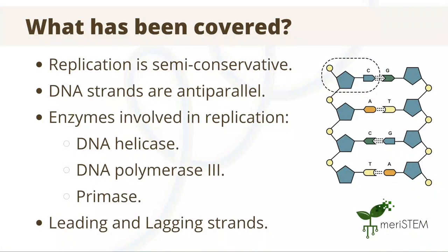In summary, today we learnt about how DNA replication is semi-conservative, and we learnt about how DNA strands are anti-parallel. We also talked about some of the enzymes involved in this process, such as DNA helicase, DNA polymerase 3, and primase. Lastly, we discussed leading and lagging strands, and how these occur because of DNA polymerase's limitation in synthesizing a new strand only in a five prime to three prime direction. Thank you for your attention.